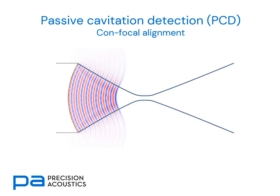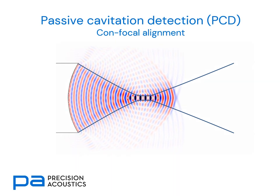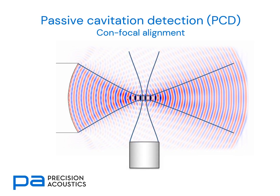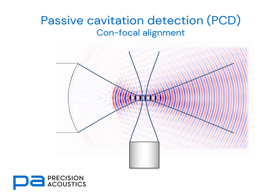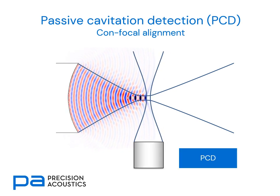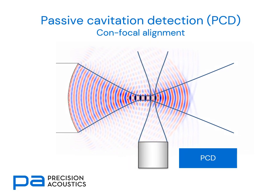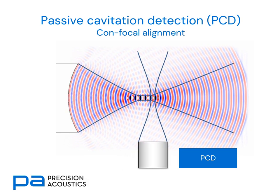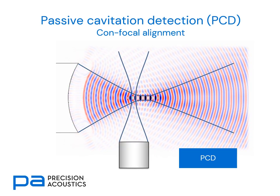So what do we mean by using a focused receiver? One of the most common examples is what we call a confocal alignment. Here we have a focused source and a focused receiver, and we can see that there's an overlap between those two focal regions. If we want to see how the cavitation spectra evolves throughout the focal region of the source transducer, we can scan our PCD axially to ensure that we're monitoring the acoustic emissions from different regions of space.